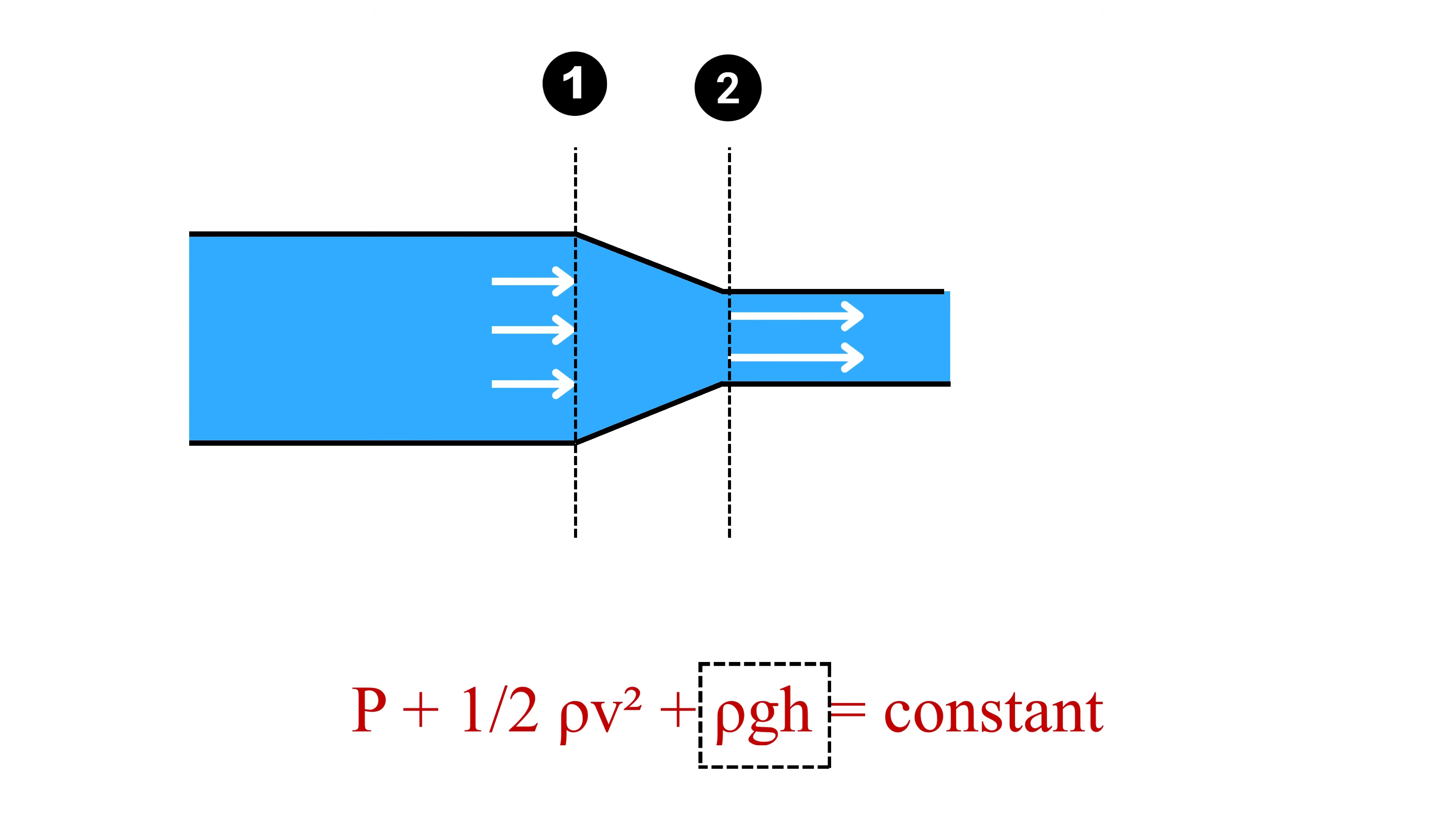If we assume the pipe is flat and there's no change in height, we can ignore potential energy. That leaves pressure and speed. So if the speed increases, the pressure must decrease to keep the total energy the same. That's why, in a tapering pipe, pressure goes down while velocity goes up.